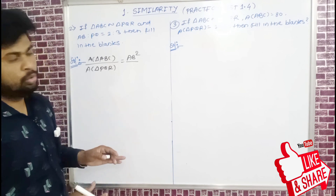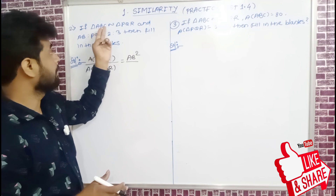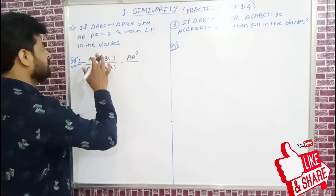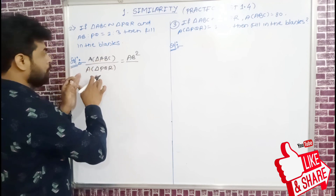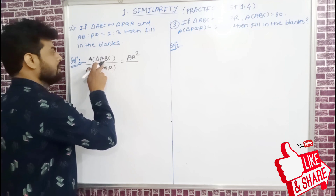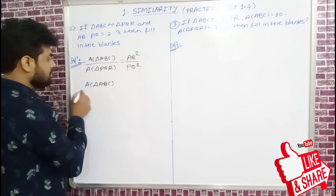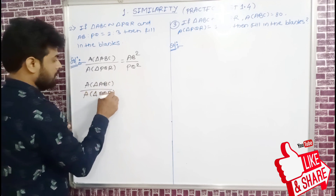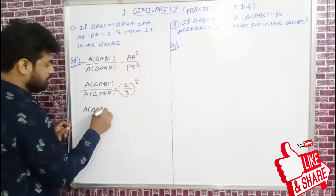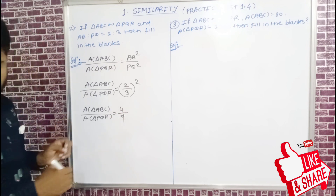Now Example 2 and Example 3 are fill-in-the-blanks type, both easy. Example 2: triangle ABC similar to triangle PQR. AB equals 2 and PQ equals 3. Area of triangle ABC upon area of triangle PQR equals 2 squared upon 3 squared equals 4 upon 9.